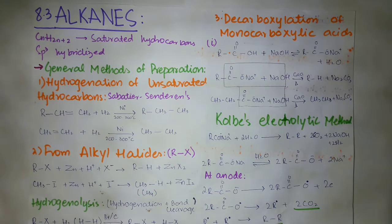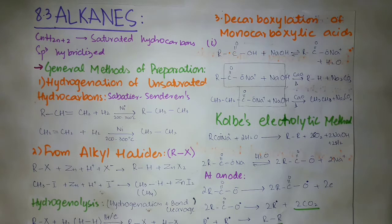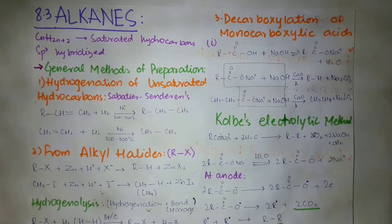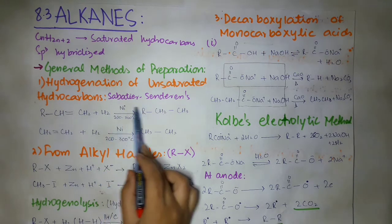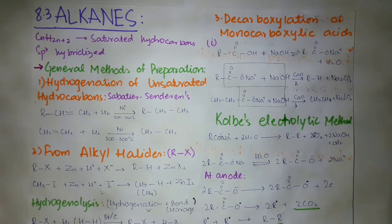Starting from alkanes, first of all we have to look at the general methods of preparation. The first method is hydrogenation of unsaturated hydrocarbons. When we have unsaturated hydrocarbons — those which have a double bond or a triple bond — we will do hydrogenation, which means addition of hydrogen. This process takes place in the presence of a metal like nickel, or we can also use platinum and palladium. This named reaction is called the Sabatier-Senderens process.